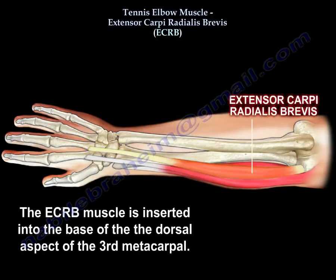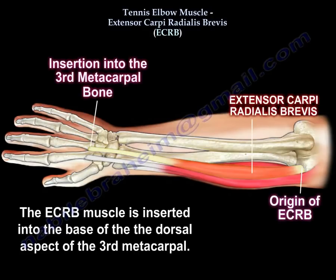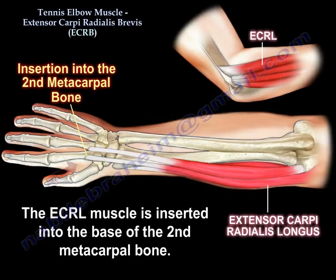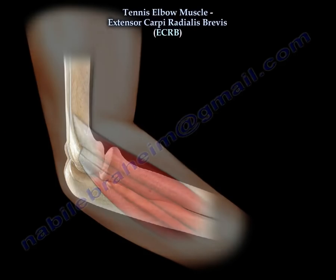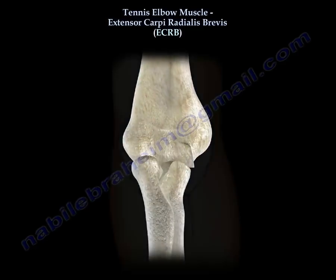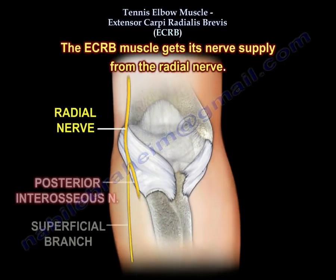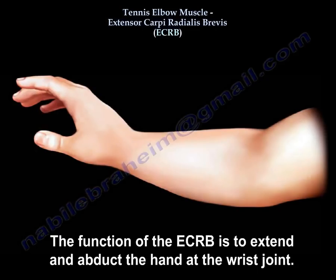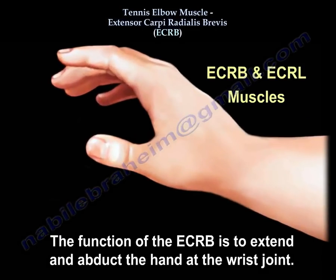The extensor carboidialis previs is inserted into the base of the dorsal aspect of the third metacarpal. The extensor carboidialis longus is inserted into the base of the second metacarpal bone. The ECRB is enervated by the radial nerve. The function of the muscle is to extend and abduct the hand at the wrist joint.